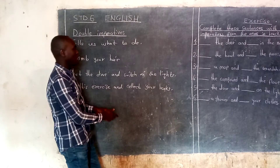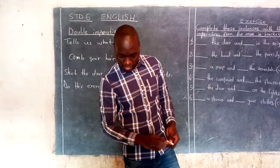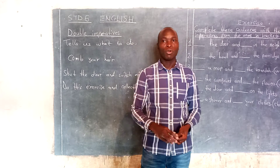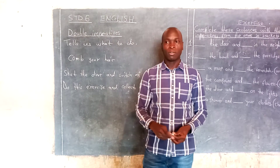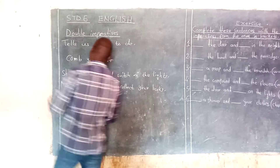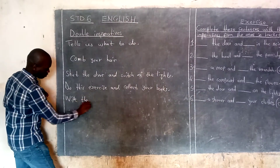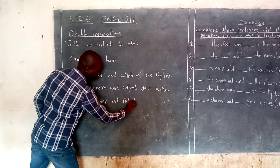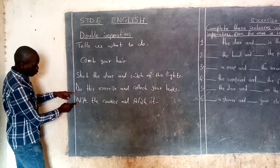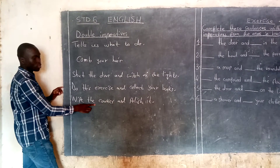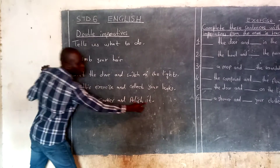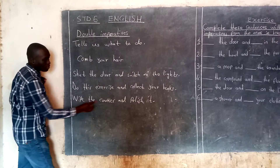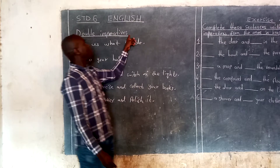Do this exercise and collect your books. Another example: let's think of one at home. 'Wipe the cooker and polish it.' Wipe the cooker is a statement on its own — it is an instruction on its own. Then 'polish it' is also an instruction on its own. So when you put the two together and come up with 'Wipe the cooker and polish it' — that's what you call a double imperative.